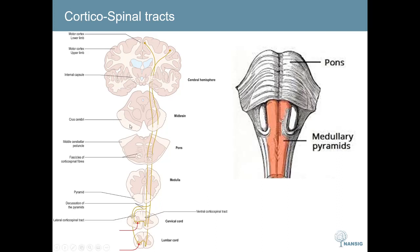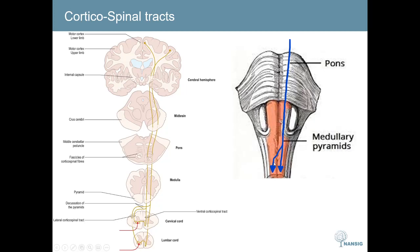The tract then passes through the crus cerebri of the midbrain, down through the pons anteriorly, and descends in the pyramids — which is why it is also known as the pyramidal tract. Here, the vast majority of fibres, about 80%, decussate and then descend as the lateral corticospinal tract, while about 10 to 20% do not decussate and descend as the ventral or anterior corticospinal tract, which then decussates at a lower level within the spinal cord. In the end, motor function ends up on the contralateral side of where the signal originated from, meaning that your left cortex is responsible for moving the right-hand side of your body.